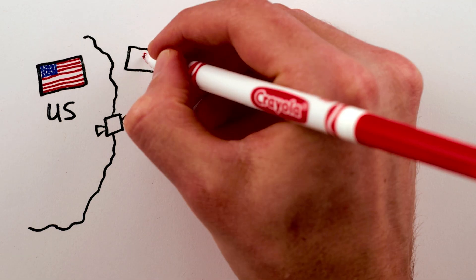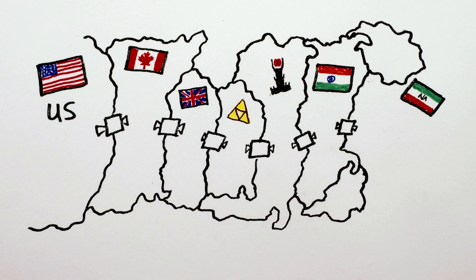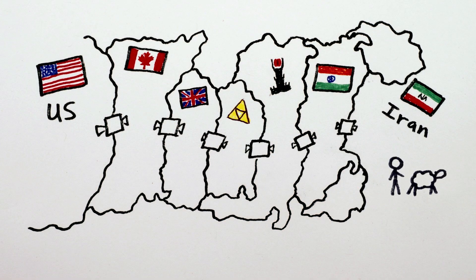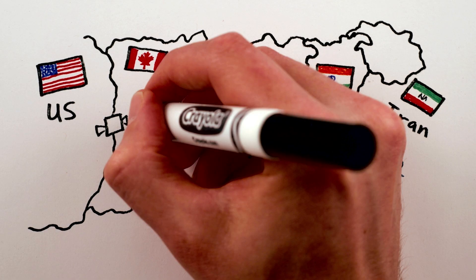Suppose instead of one border and one exchange rate, we have a whole row of countries that can each exchange money with their neighbors. Now, if I want to pull off my arbitrage shenanigans by selling a sheep in Iran, I'll have to transfer the money back to the US, which in this case means it'll be exchanged at every border along the way.